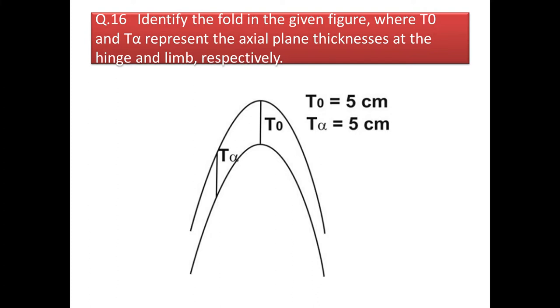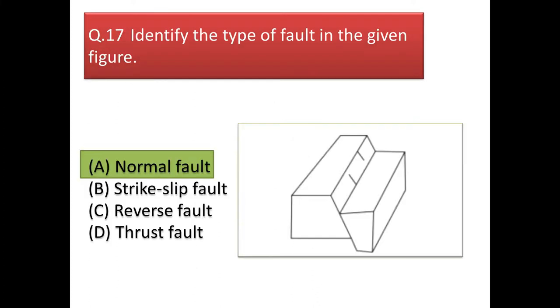Next question: identify the type of fault in the given figure. From the offset on the fault plane you can see that one block is moving down compared to the other block. So this is a normal fault.